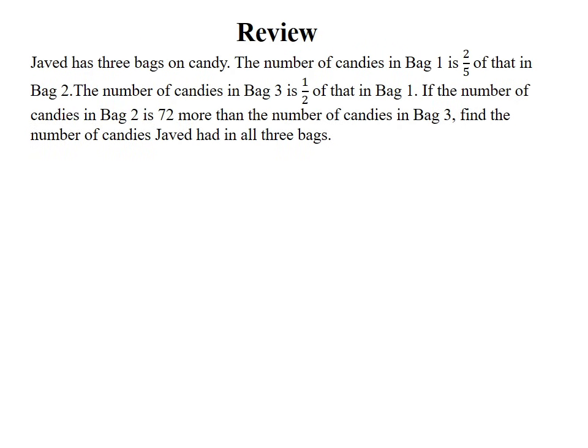Every problem solver would review to ensure that the solution to his problem is accurate. Let us start with the assumption that bag two has 90 candies. If bag two had 90 candies, bag one would have had two-fifths of the 90. Five divided by five is one. Ninety divided by five would give me 18. And this would give me a total of 36.